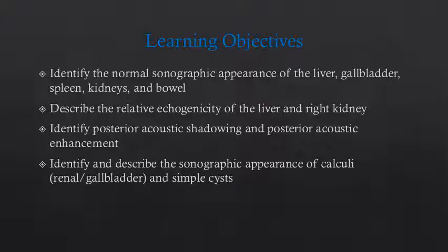The overall learning objectives for all three sessions and the hands-on workshop are as follows. At the end of this workshop, you should be able to identify the normal appearance of the liver, gallbladder, spleen, kidneys, and bowel. You should understand and be able to describe the relative echogenicity of the liver with respect to the right kidney.